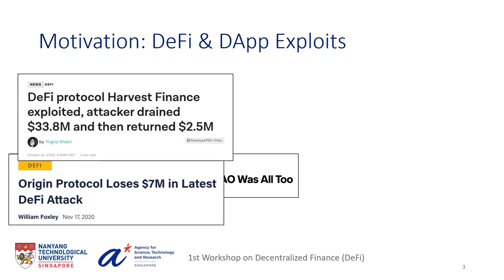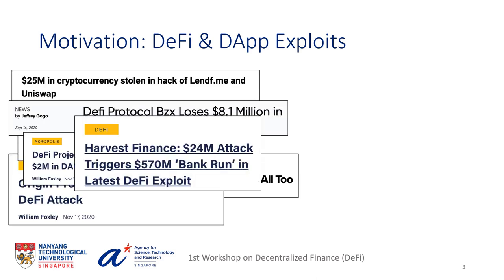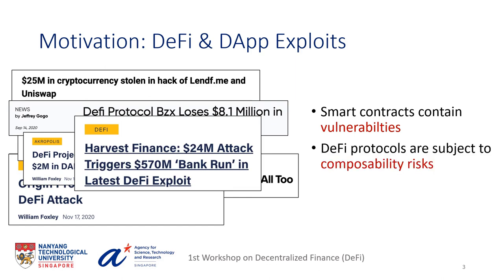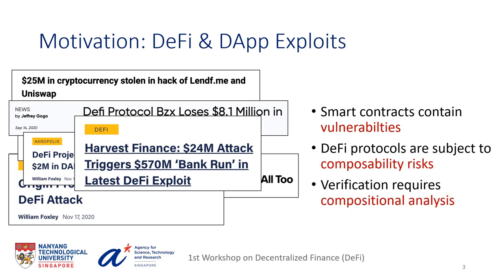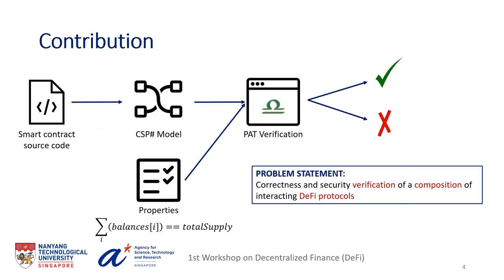Unfortunately, composability also introduces additional risks to the DeFi applications. Since smart contracts are known to contain vulnerabilities, composability implies that if one protocol is vulnerable, then other DeFi protocols that interact with it or are built on top of it can also be vulnerable. Therefore, verification of security and correctness of these protocols requires compositional analysis, and in this work we try to address the problem of correctness and security verification of a composition of interacting DeFi protocols.